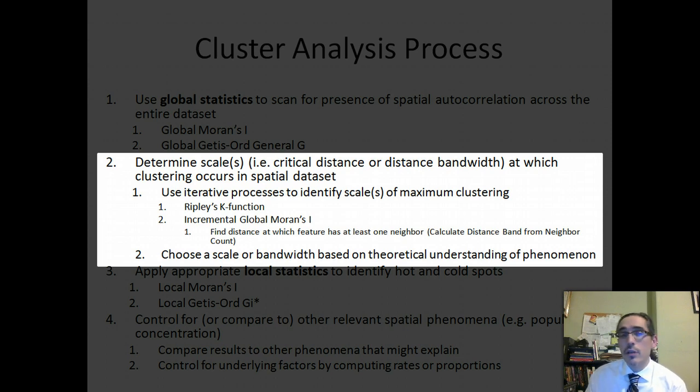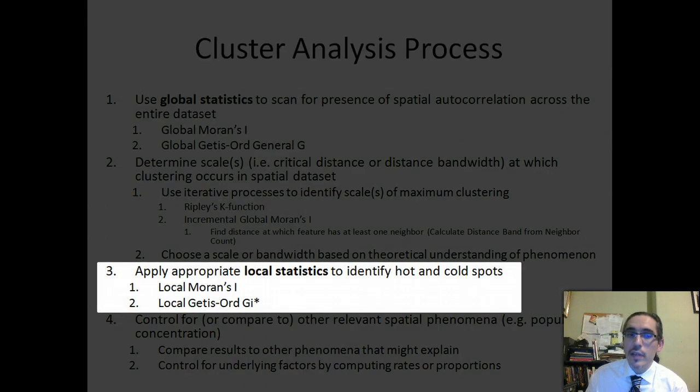Once you've determined the critical distance, then you can go straight to the local statistics. You have a local Moran's I and the local Getis-Ord GI star tools. Local meaning it's going to be applying these and computing these statistics for each of the features in your dataset. Whereas a global statistic gave you one number for the entire dataset as an assessment of spatial autocorrelation, the local statistic gives you a number for each feature, which allows you to visually inspect it and see where in your dataset the hotspots or clusters are.